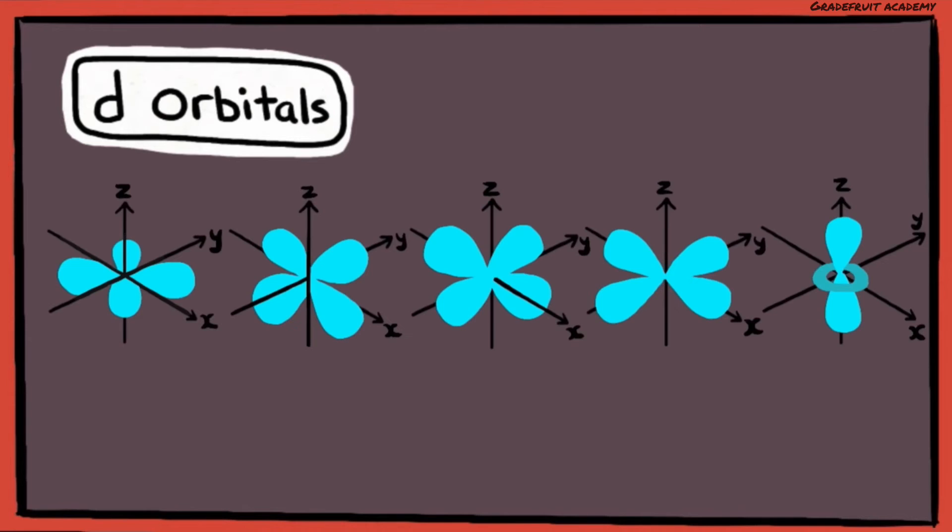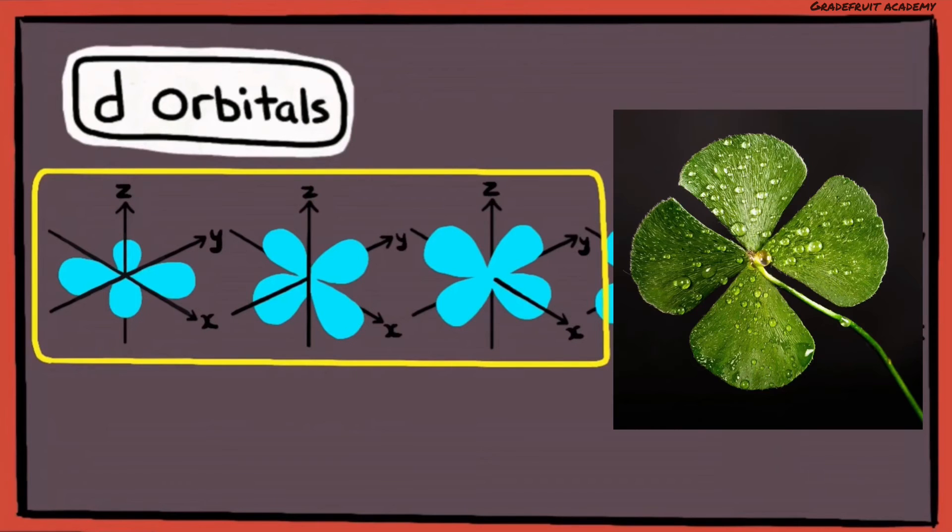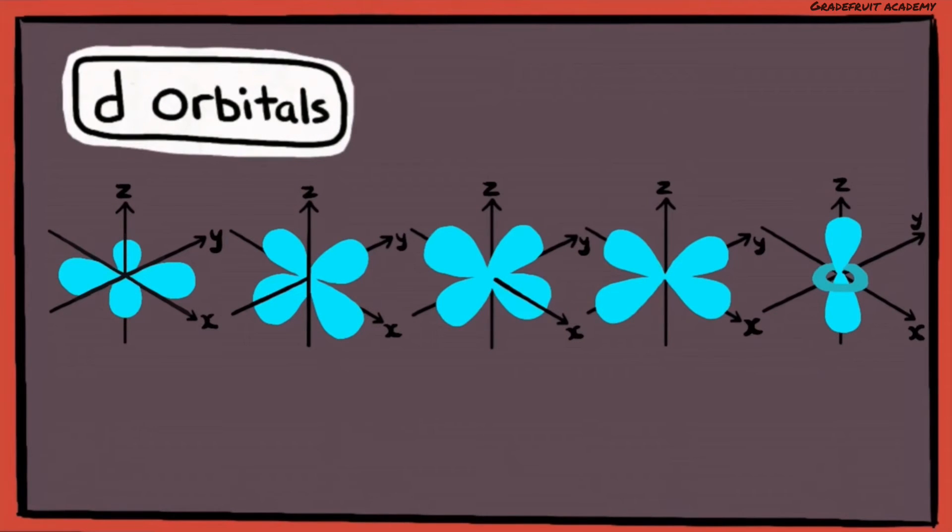Lastly, there are 5 D orbitals in D subshells. The first 3 D orbitals have a 4-lobe shape, like a 4-leaf clover, and their lobes point in between the axes.